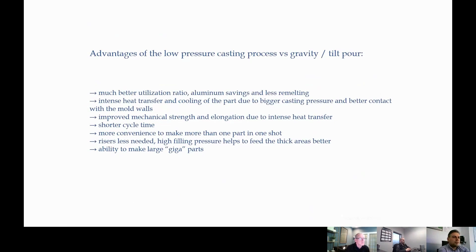So after all, we can list all these advantages of low pressure versus gravity and tilt pour: using aluminum in high percentage and less remelting, which is a big saving for the foundry. Because of the mechanism of the solidification, because of the higher pressure of the filling, we have really fast and big heat transfer between the alloy and the mold wall. So we have mechanical properties much higher than gravity. We have also shorter cycle time. This is also important.